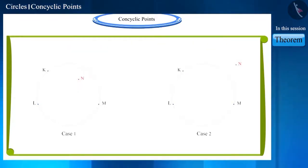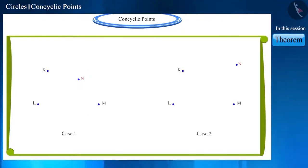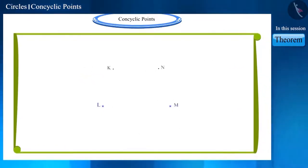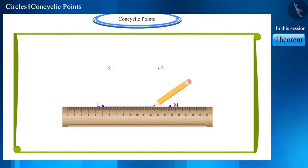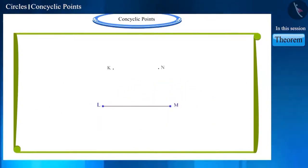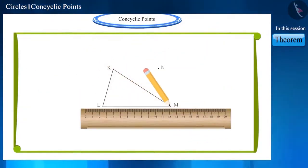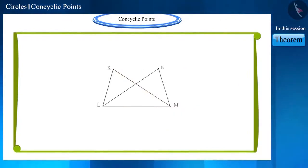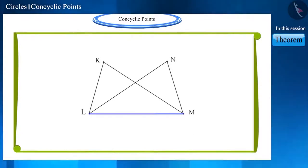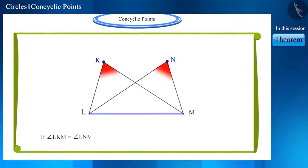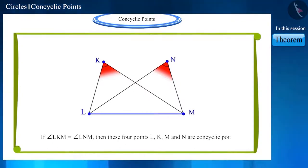Without drawing a circle, we can also check whether four given points are concyclic or not. Join the points L and M, and by joining both points with K, draw triangle LKM. Similarly, draw triangle LNM. If the angles LKM and LNM subtended by the line segment LM at points K and N are equal, then we can say that these four points K, L, M, and N are concyclic points.